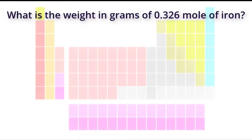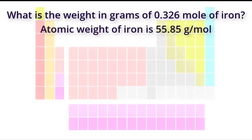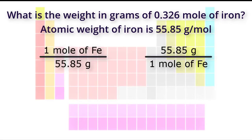What is the weight in grams of 0.326 moles of iron? We know that the atomic weight of iron is 55.85 grams per mole, so the conversion factor to use is either one mole of iron per 55.85 grams, or 55.85 grams per one mole of iron. To convert moles of iron to grams of iron, we need to use the appropriate conversion factor.